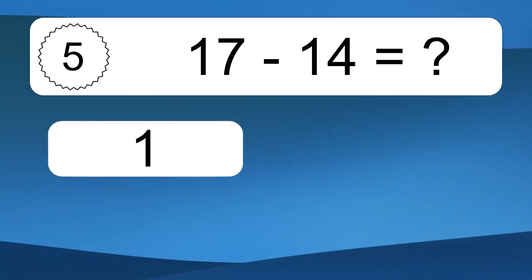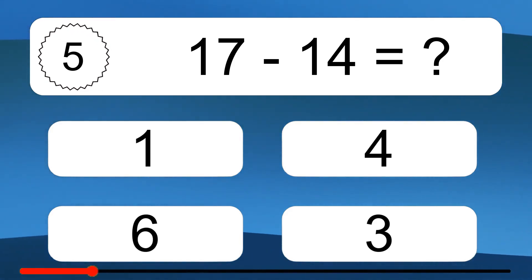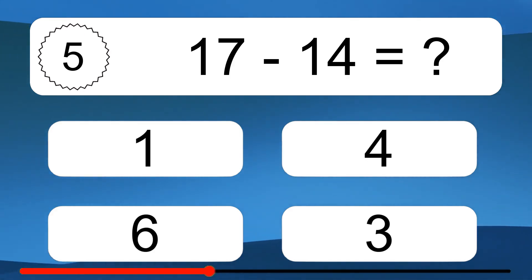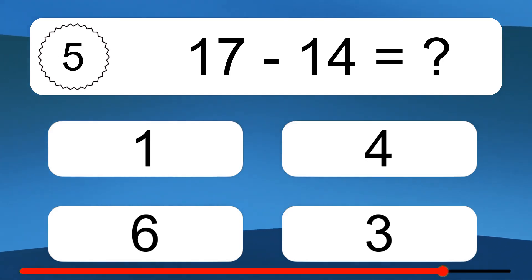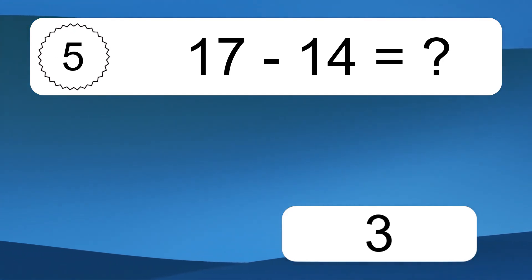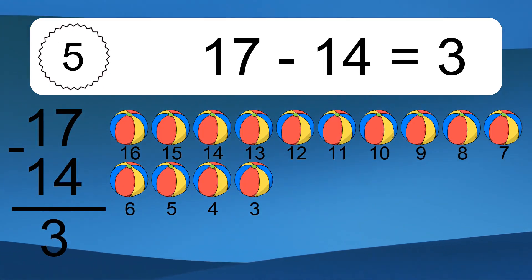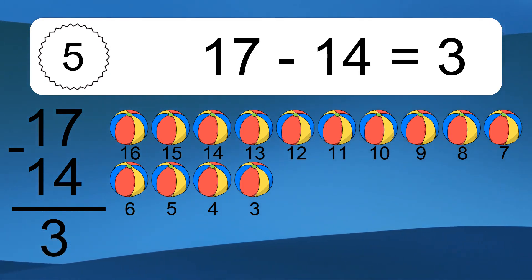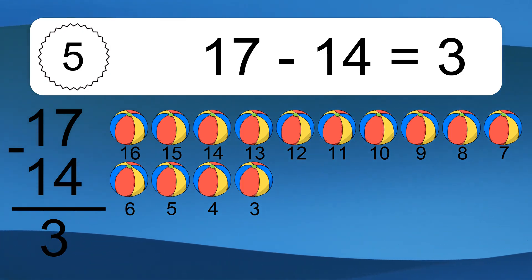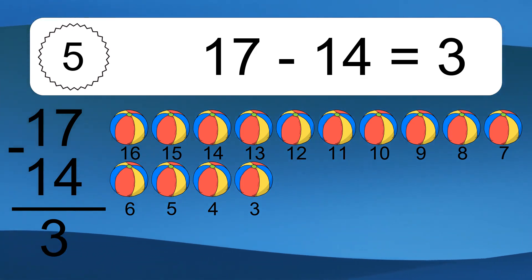17 minus 14 equals what? 17 minus 14 equals 3. Let's count it. 16, 15, 14, 13, 12, 11, 10, 9, 8, 7, 6, 5, 4, 3.